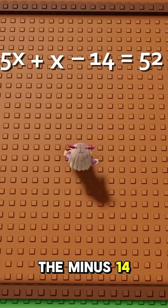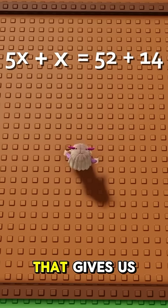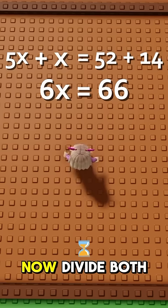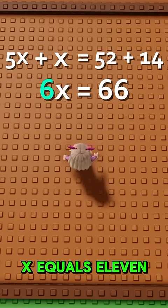Then we move the minus 14 over to the right which is 52 plus 14. That gives us 6x equals 66. Now divide both sides by 6. x equals 11.